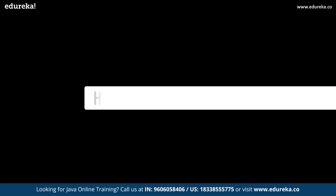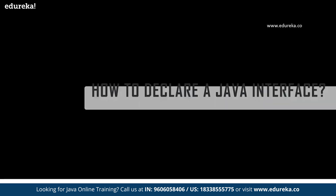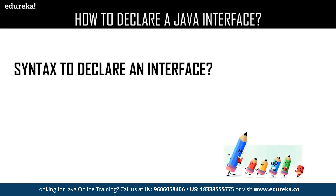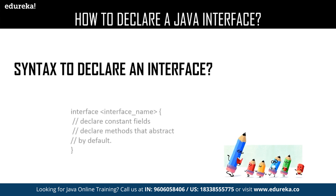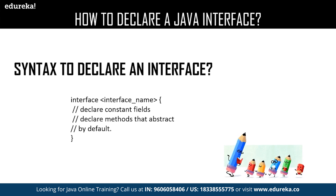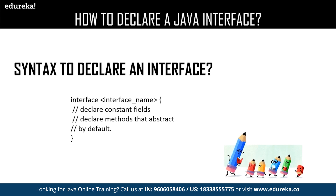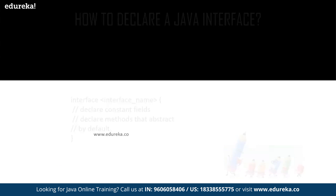Now let us have a quick revision about how to declare an interface. This is the syntax for declaring an interface where you will be using the interface keyword followed by the name of your interface. Inside the interface you can declare your methods. By default, all the methods which you declare in an interface are considered to be public.